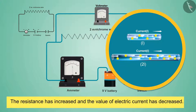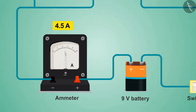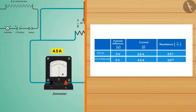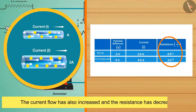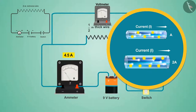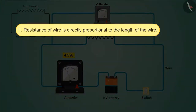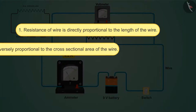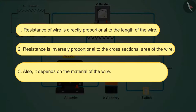In the second case we put a thick wire and compare the ammeter reading with the previous case. We see that there is an increase in the value of the ammeter. As the thickness of the wire is increased, the current flow has also increased and the resistance has decreased. In other words, the thicker the wire, the more cross-sectional area it has. We can conclude from the activity: one, resistance of a wire is directly proportional to its length; two, resistance is inversely proportional to the cross-sectional area of the wire.